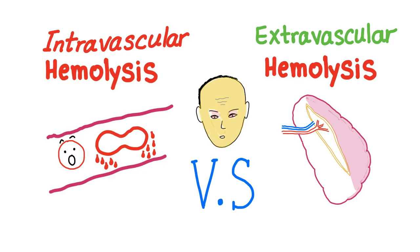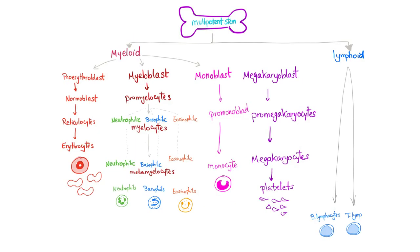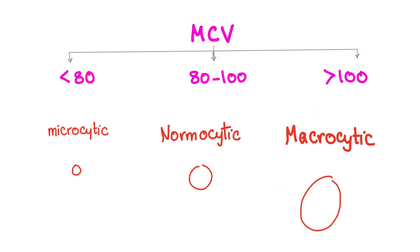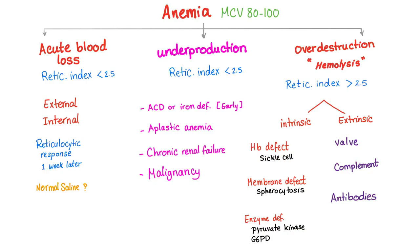Hello, one more time. Let's compare intravascular hemolysis and extravascular hemolysis. We have discussed them separately in the previous video — today is a comparison. Here is your erythropoiesis, here are the RBCs. Mean corpuscular volume determines whether the anemia is microcytic, normocytic, or macrocytic. Here is your normocytic anemia: acute blood loss, underproduction, or overproduction — or hemolysis.